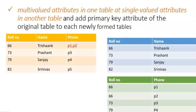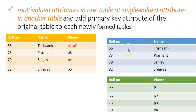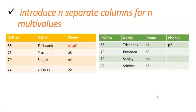The second approach uses the same problem table: place all single-valued attributes in one table and multi-valued attribute columns in another table. For example, name is a single-valued attribute and stays in one table, while phone is a multi-valued attribute and is placed in a new separate table. These two tables are linked using the primary key — roll number — which is common to both. So roll number 66 appears with P1 and P2 in the phone table.